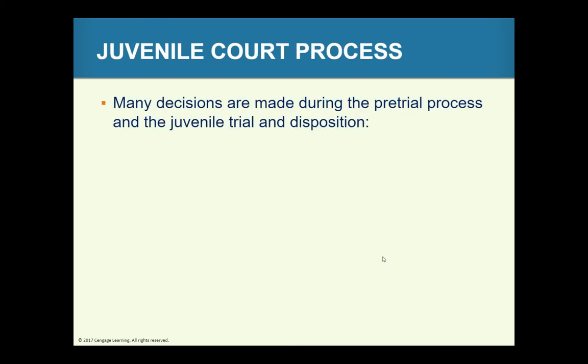Let's talk about the process that happens when a juvenile is brought into juvenile court. Many decisions are made during the pretrial process, juvenile trial, and disposition. One decision is whether to treat the case formally, and whether to release the child or detain them into the temporary care of the state. Detaining a child can be very traumatic. Facilities are prison-like with locked doors and barred windows. Many experts advocate that detention be limited to alleged offenders who require secure custody for the protection of themselves and others.